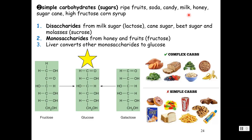Simple carbohydrates are simple sugars found in ripe fruits, soda, candy, milk, honey, sugarcane, and high fructose corn syrup. Disaccharides — 'di' meaning two, 'saccharide' referring to sugar — include milk sugar like lactose, cane sugar, beet sugar, molasses, and table sugar, sucrose.